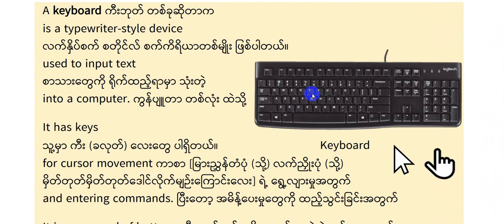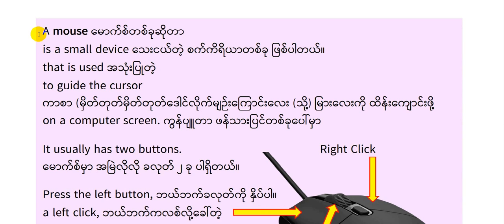Let's start with the mouse. Computer mouse. A mouse is a small device that is used to guide the cursor. The cursor controls your information on the computer.